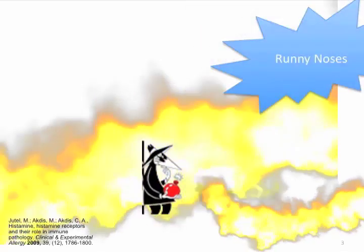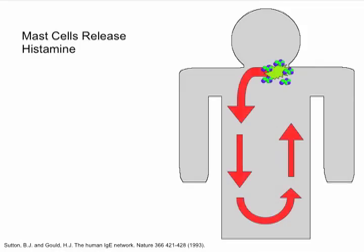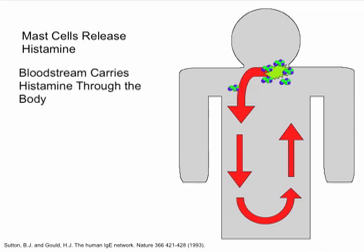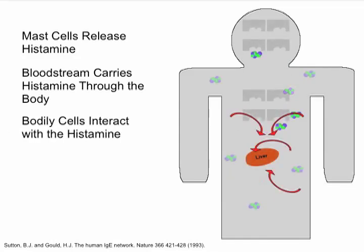When other cells pick up the presence of histamine, responses like smooth muscle constriction and increased blood flow result in symptoms like runny noses and itchy eyes. When the mast cells release histamine in an allergic reaction, the histamine can go two places. Locally, it can interact with tissues causing inflammation. It can also travel through the bloodstream to every spot in the body until it either interacts with a cell or is eventually removed in the liver.